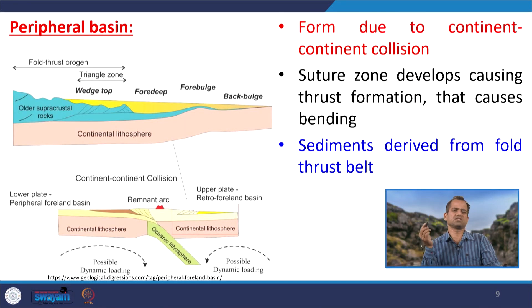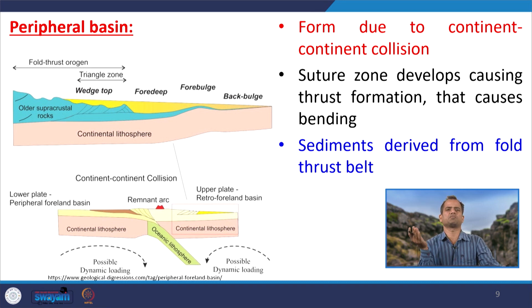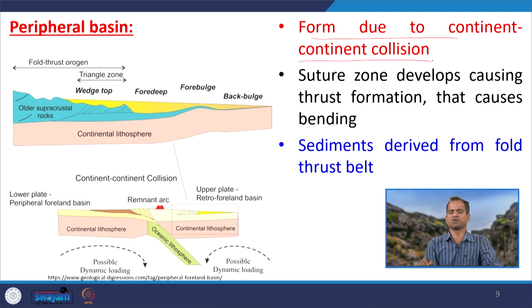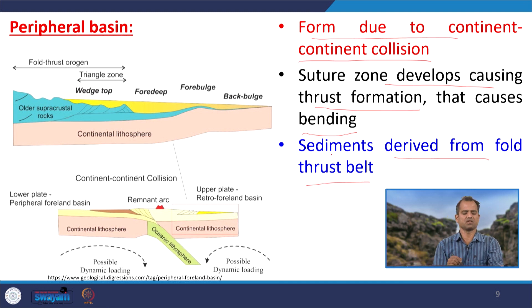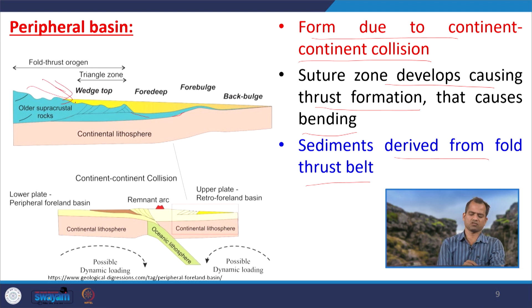Another type of basin in the convergent setting is called the peripheral basin — 'periphery' meaning the boundary. It forms due to continent-continent collision, where a suture zone develops causing thrust formation, bending, and sediments derived from the fold-thrust belt. The peripheral basin here mostly receives sediments derived from those developing thrust sheets.